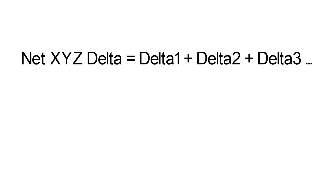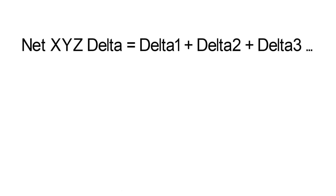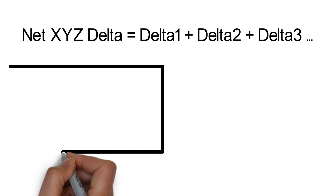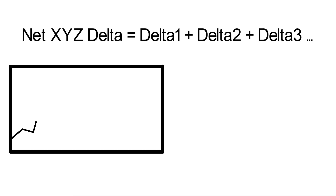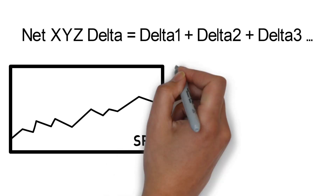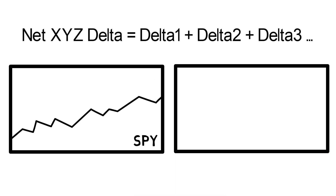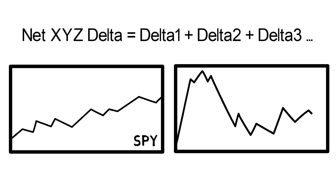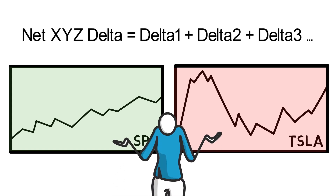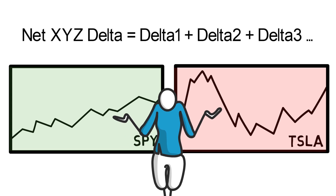It would be great if you could do this for your entire portfolio. The problem is that by simply adding up the deltas of different positions, you don't account for differences in volatility. For example, a 100-share position in SPY has a delta of 100, but a 100-share position in Tesla also has a delta of 100, even though Tesla is much more volatile than SPY — making the Tesla position much riskier. That's why you can't really use delta by itself to compare the directional risk of different positions; otherwise buying 100 shares of SPY would seem just as risky as buying 100 shares of Tesla.